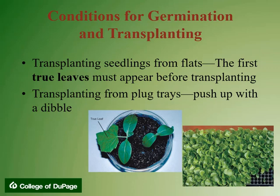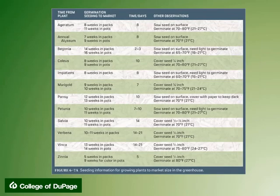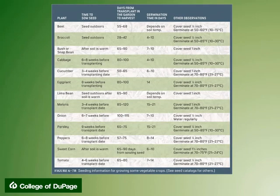After seeds germinate, they develop seed leaves or cotyledons, the first leaves to appear on the plant. The plant should be allowed to grow until the first true leaves are present before transplanting. When handling seedlings, hold them by their true leaves using the thumb and forefinger — do not hold them by the stem, since the seedling could die if the stem is badly bruised. If transplanting from plug trays, push up with a dibble, which is a pointed hand tool for making holes in the ground for seeds or young plants. A chart from the textbook gives seeding information for growing plants to market size within a greenhouse, including weeks to keep in packs versus a pot, days to germination, and additional observations. Another chart provides the same seeding information for vegetable crops.